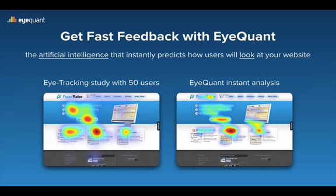Now, in order to direct attention to these areas, we need a way of measuring which parts of the page are most attention-grabbing. So we're of course going to use iQuant for this. For those of you who don't know, iQuant is an artificial intelligence that instantly predicts which content on a design will visually stand out and attract users' attention when they arrive on the page. Here you can see an example of how accurate it is compared to running an eye-tracking study. It's a really powerful tool.